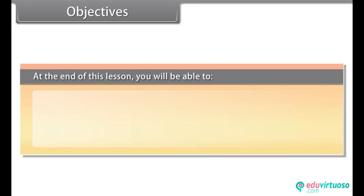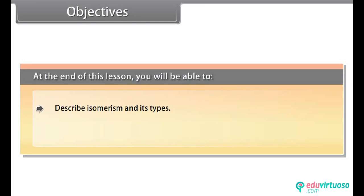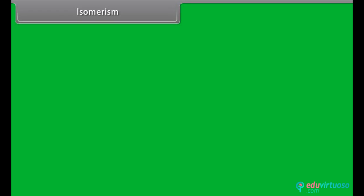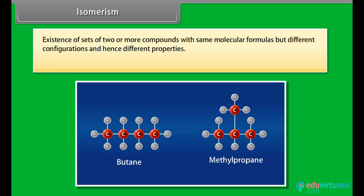At the end of this lesson, you will be able to describe isomerism and its types, and explain fundamental concepts in organic reaction mechanism. Isomerism is the existence of sets of two or more compounds with same molecular formulas but different configurations and hence different properties.